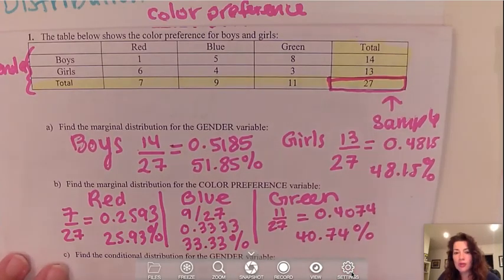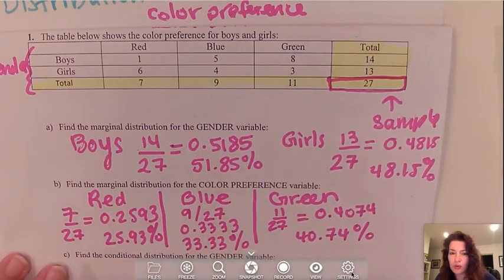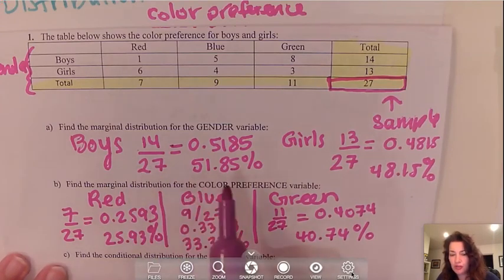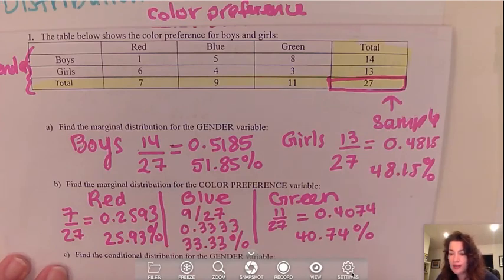So this is it for the marginal distribution for gender and the marginal distribution for color preference. In the next video I'm going to discuss conditional distribution.